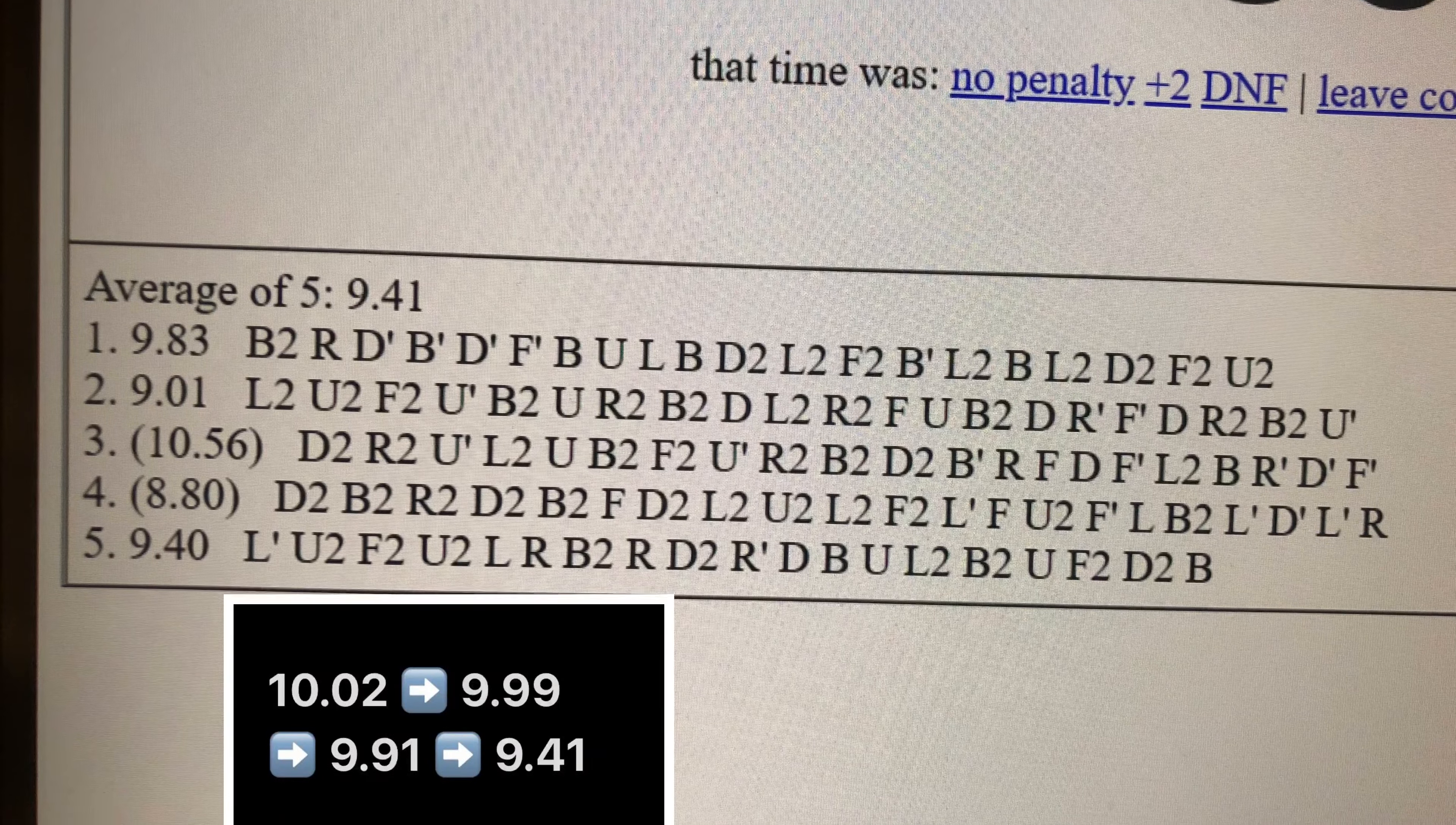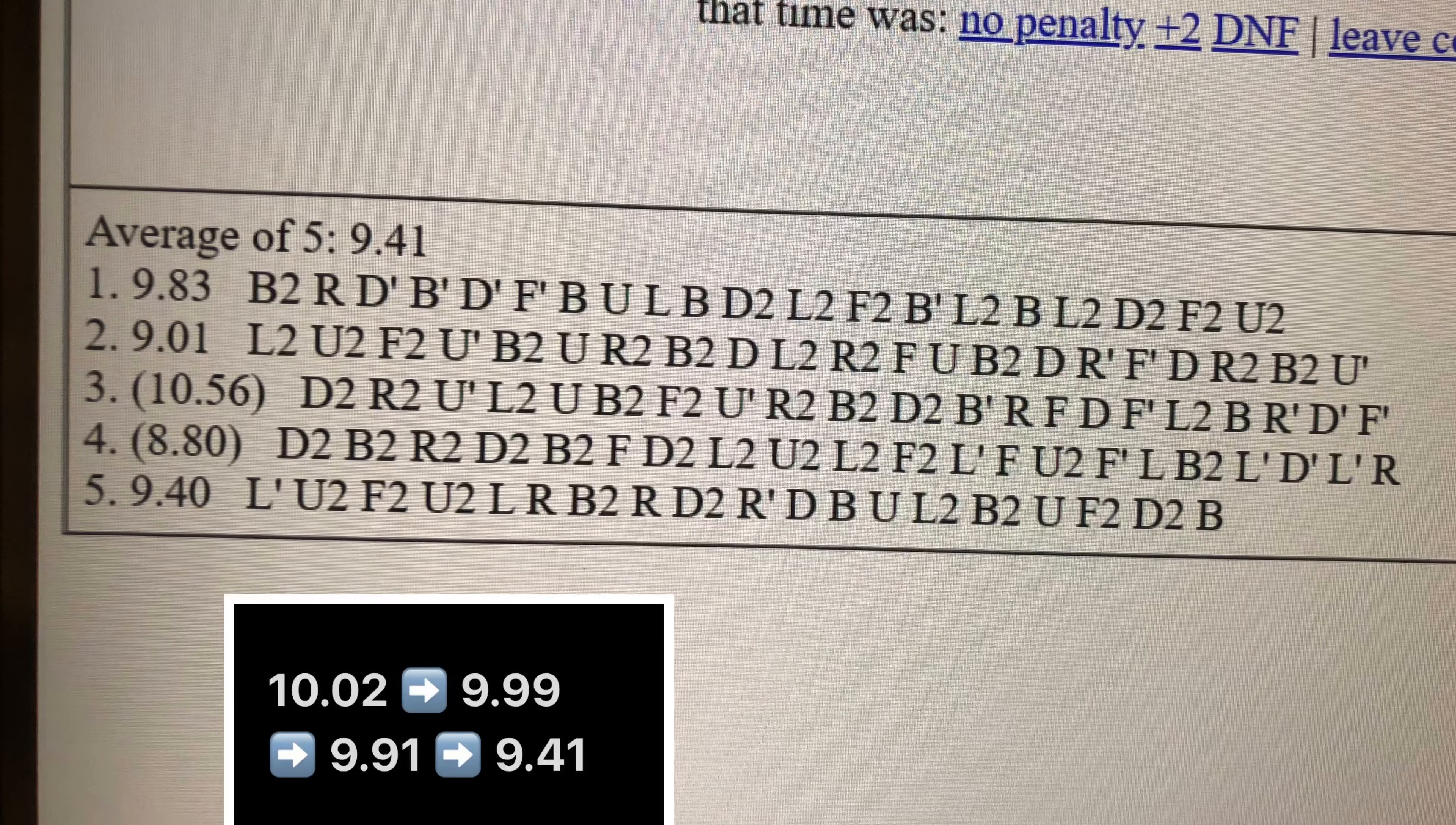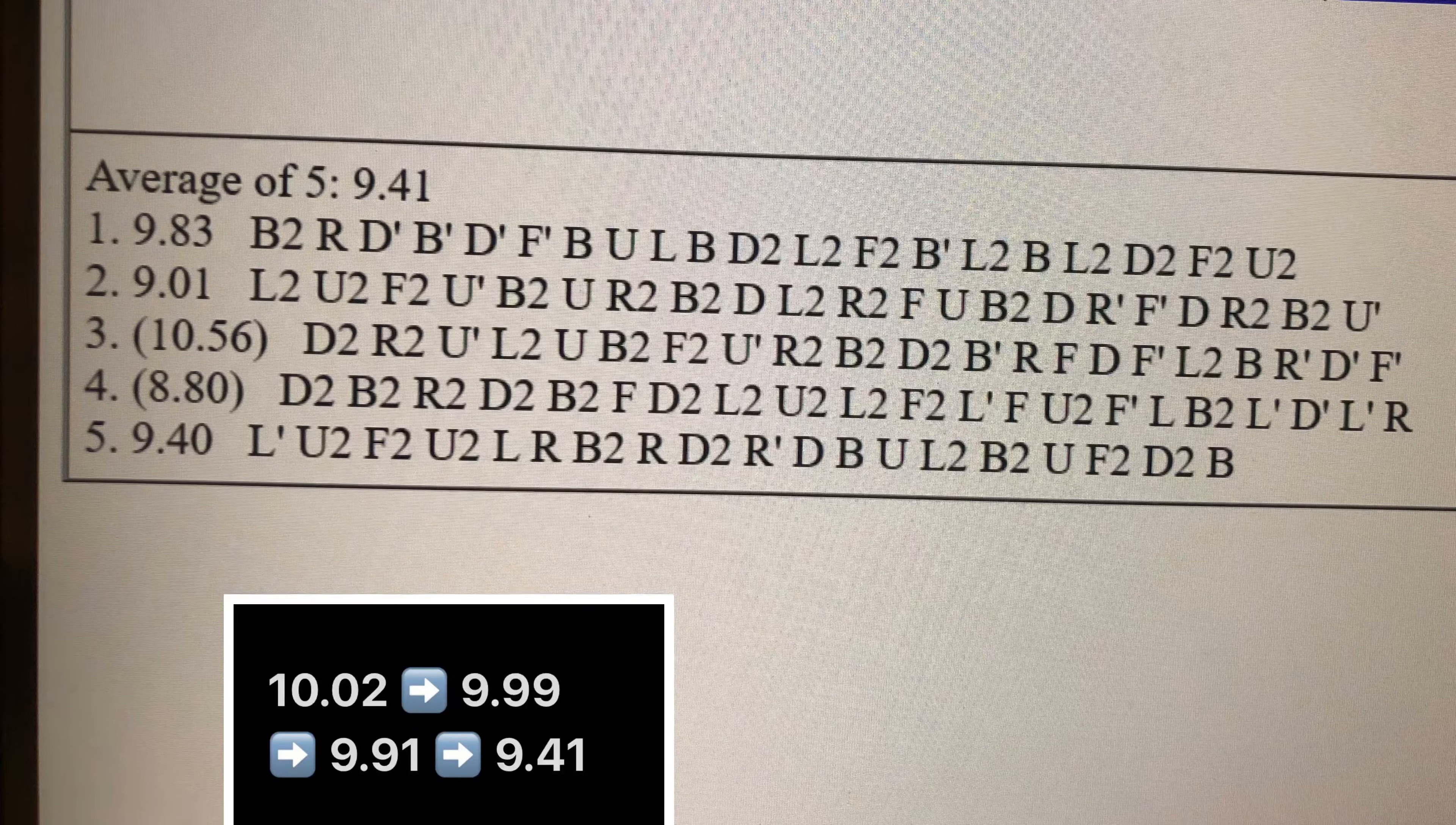And I really like that number because it's the descending perfect squares: 9, 4, 1. Also, my last few PB averages of 5 have been 10.02, 9.99, and 9.91, so it's nice to finally break free from this near 10 neighborhood that's trapped me.